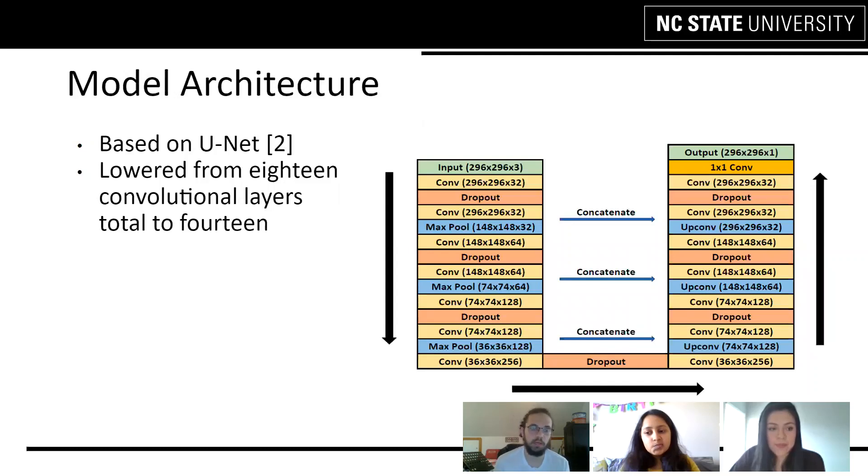As mentioned before, our model architecture was going to be based on the U-Net, which is a purely convolutional network. As you can see on the image on the right, this includes a shrinking side and an expanding side.